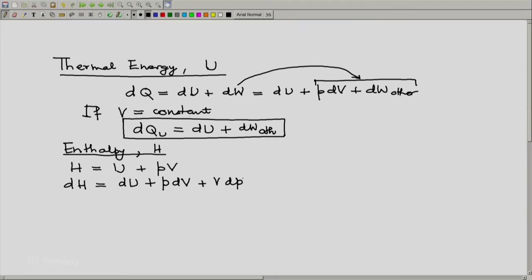Now notice that we have from the earlier expression dU plus PDV is dQ minus dW other. So let us replace it like that: dQ minus dW other plus VdP. Now let us transpose dQ to one side and consider a process in which pressure is constant.